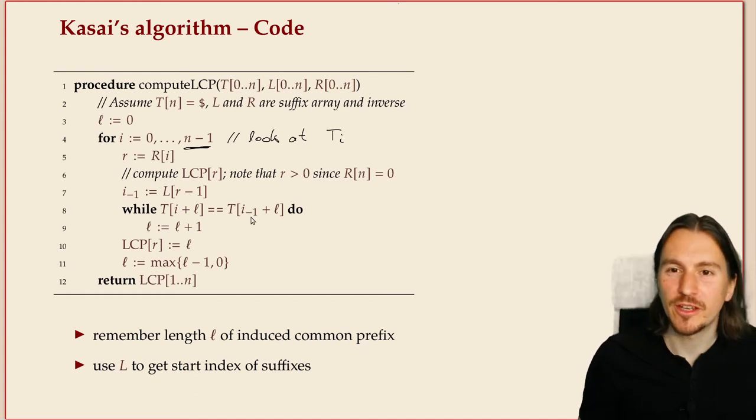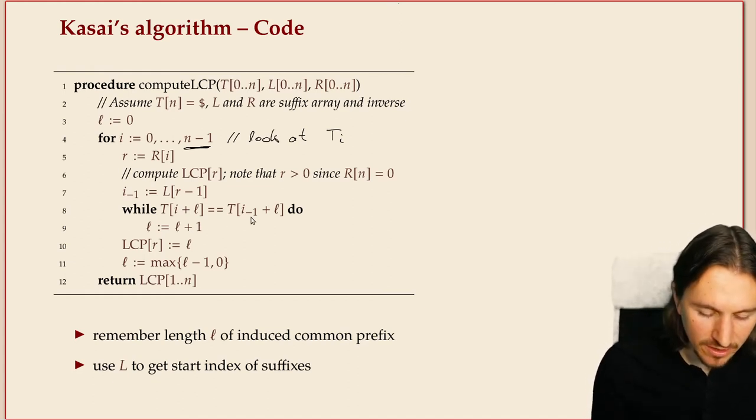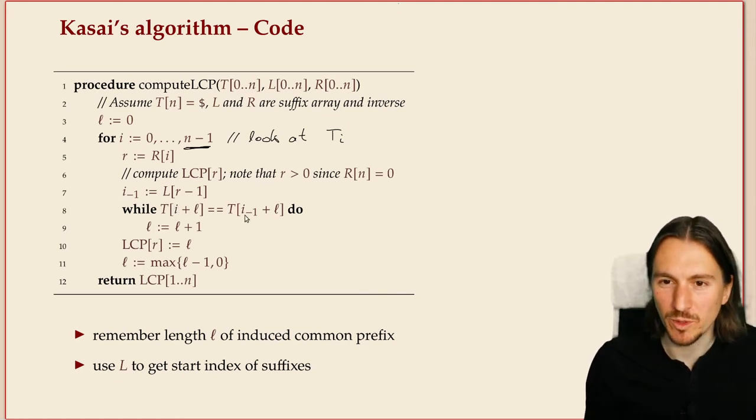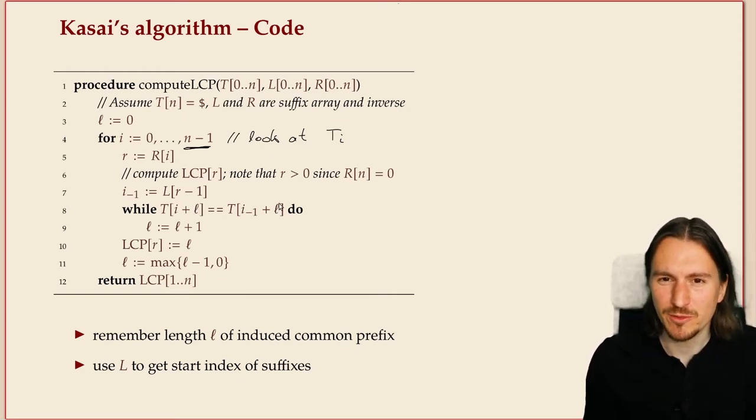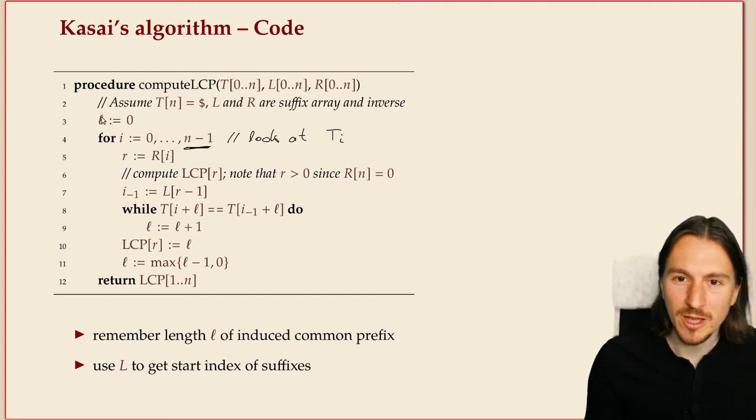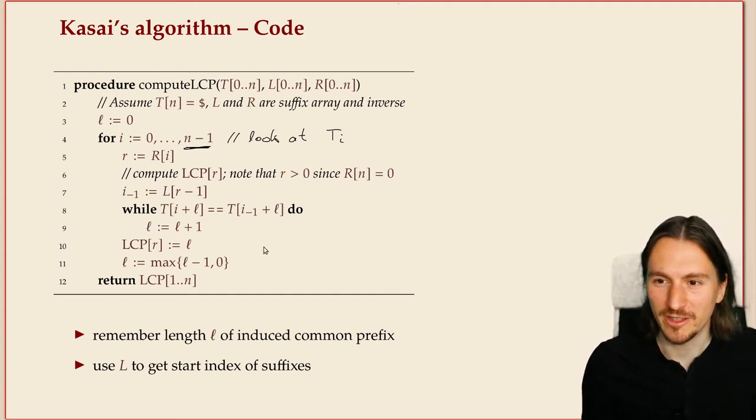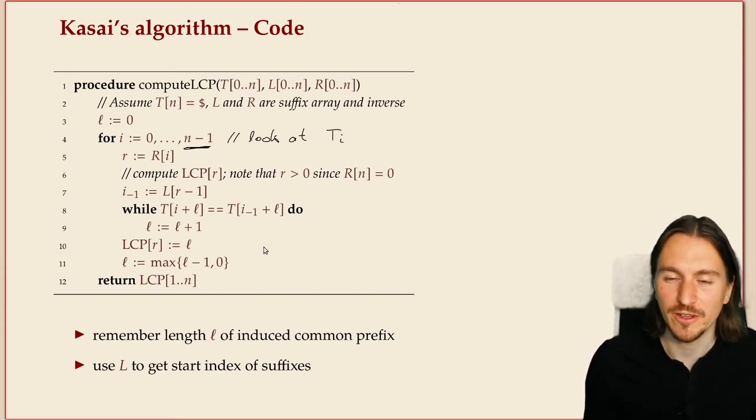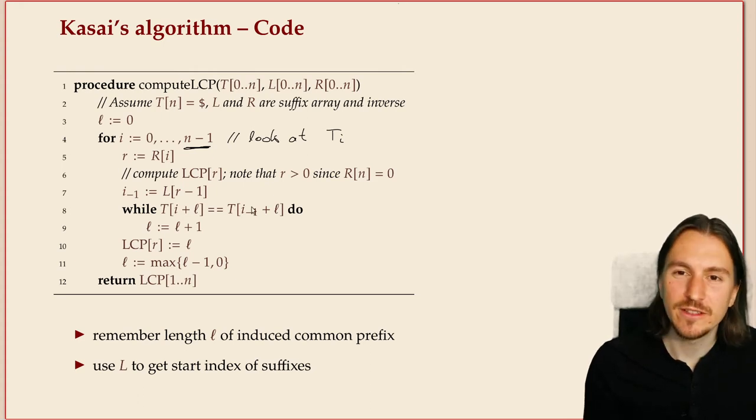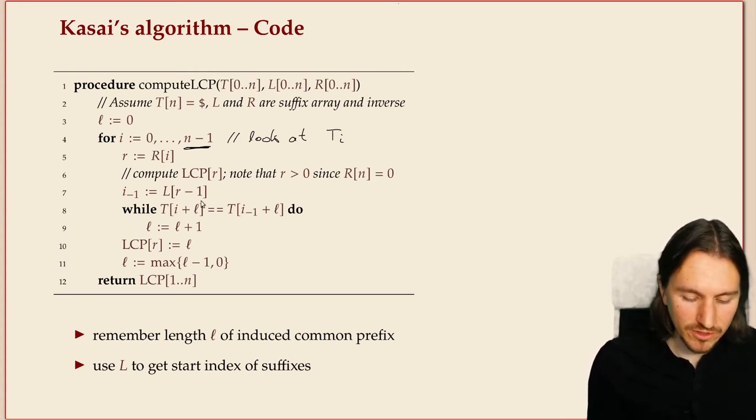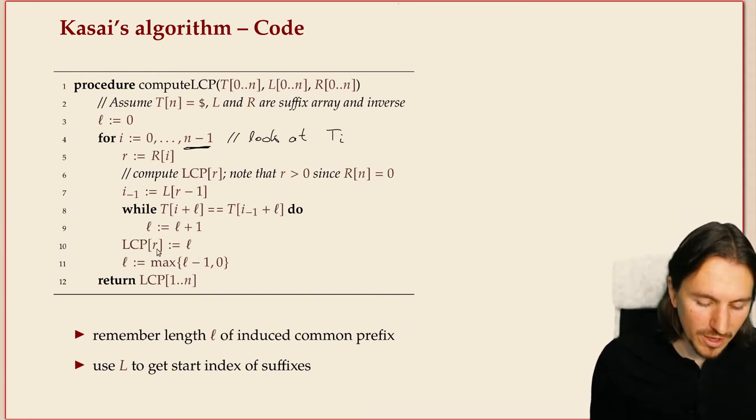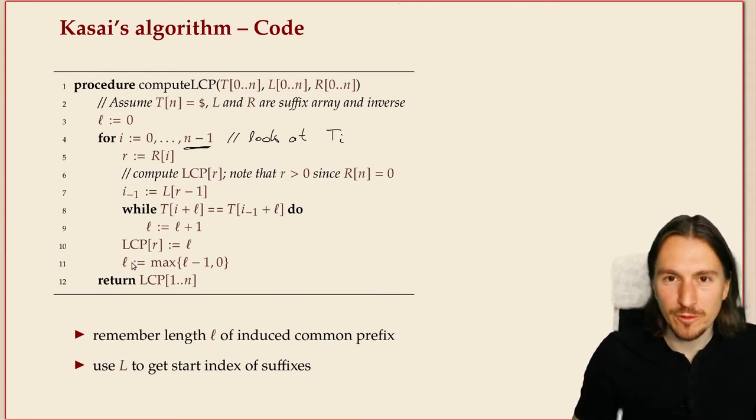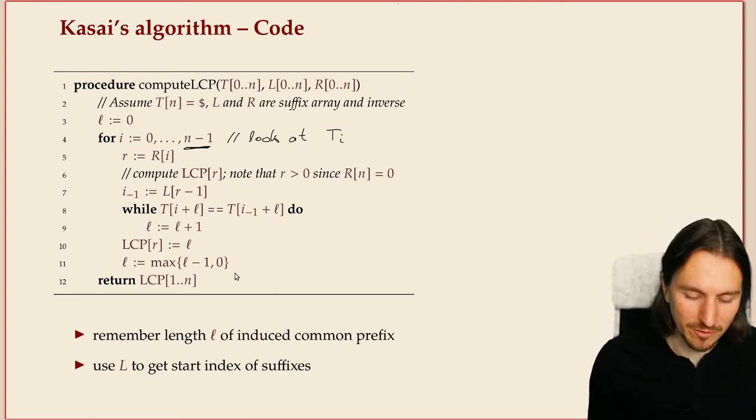And then here we do the actual character comparisons and notice that we compare the suffix TI and the suffix TI minus one. But we start comparing at the L position of those suffixes because we already inherited a potentially a shared common prefix of length L. Initially that's zero. But when the algorithm keeps going, L can have a larger value in the time. That was the green characters in my example. So as long as we find matching characters, we increment L. As soon as this terminates, L is the actual length of the shared prefix of these two.